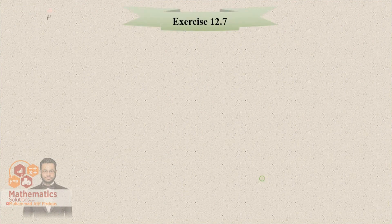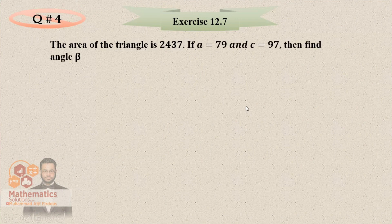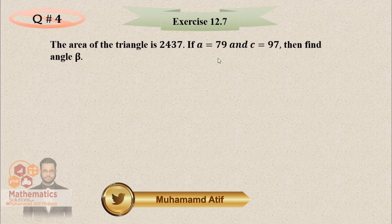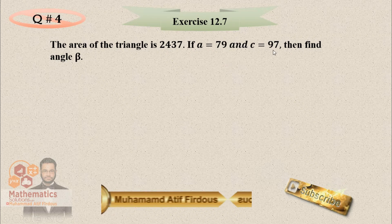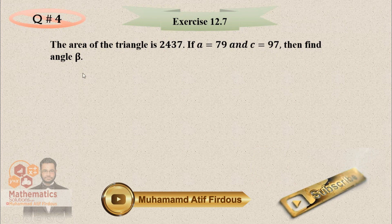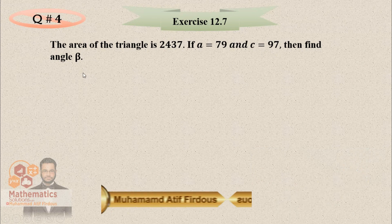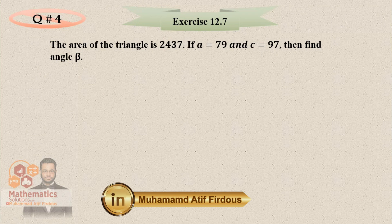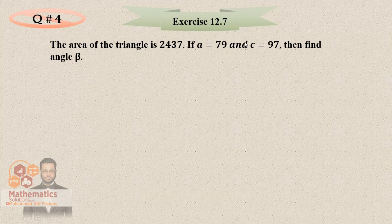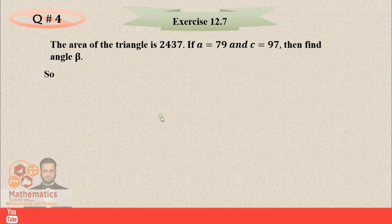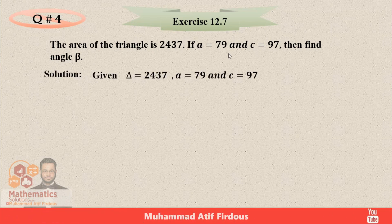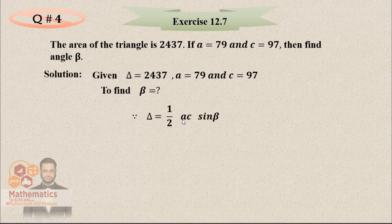Question number 4: this time the area of the triangle is given, along with a = 79 and c = 97. You have to find angle beta. Since two sides and the included angle relate to area, use: delta = (1/2) AC sin(beta). Rearrange for sin(beta), then take the inverse to find beta in degrees.